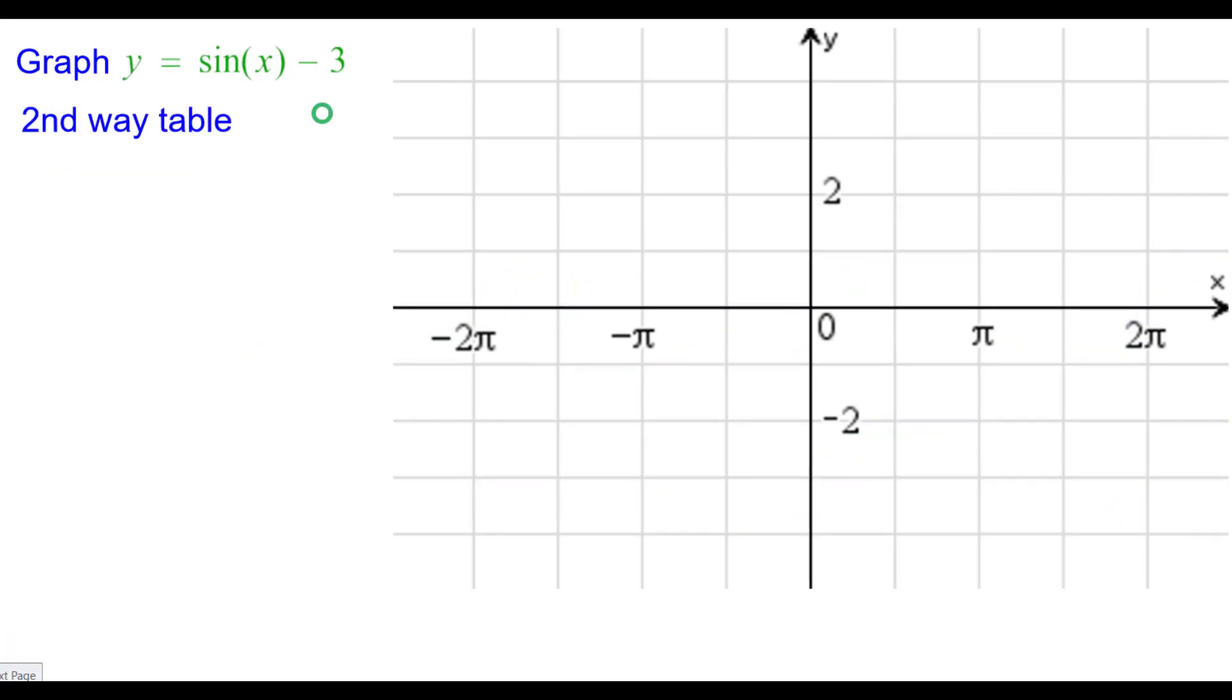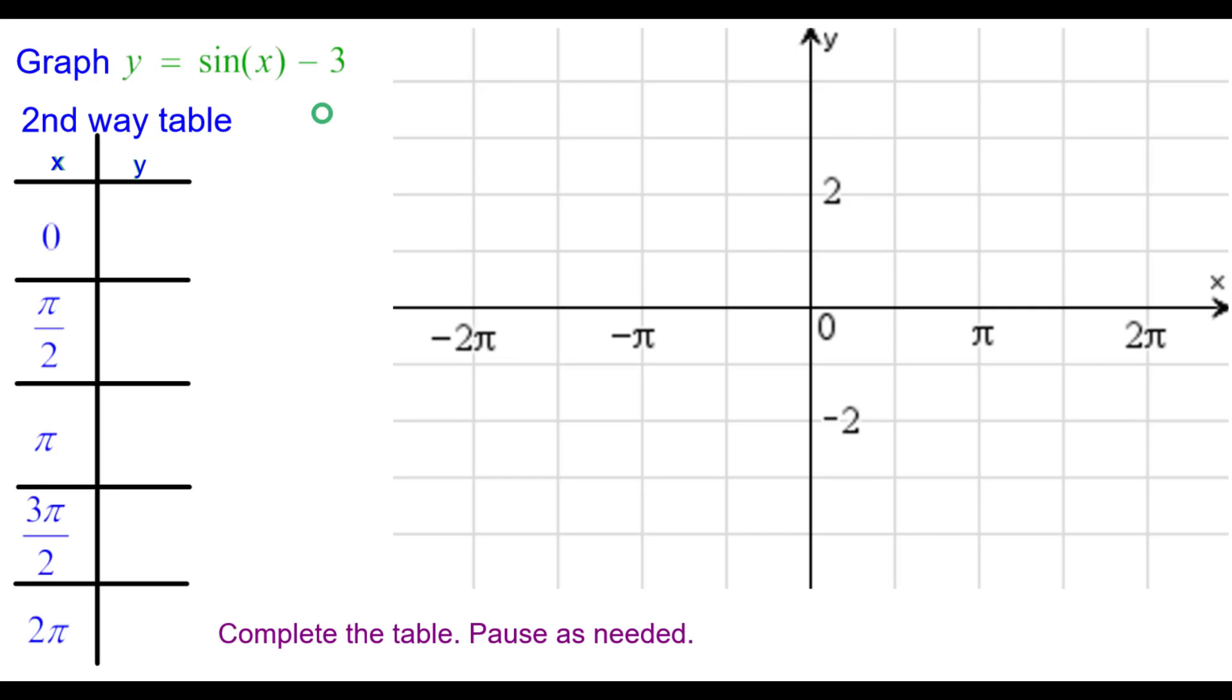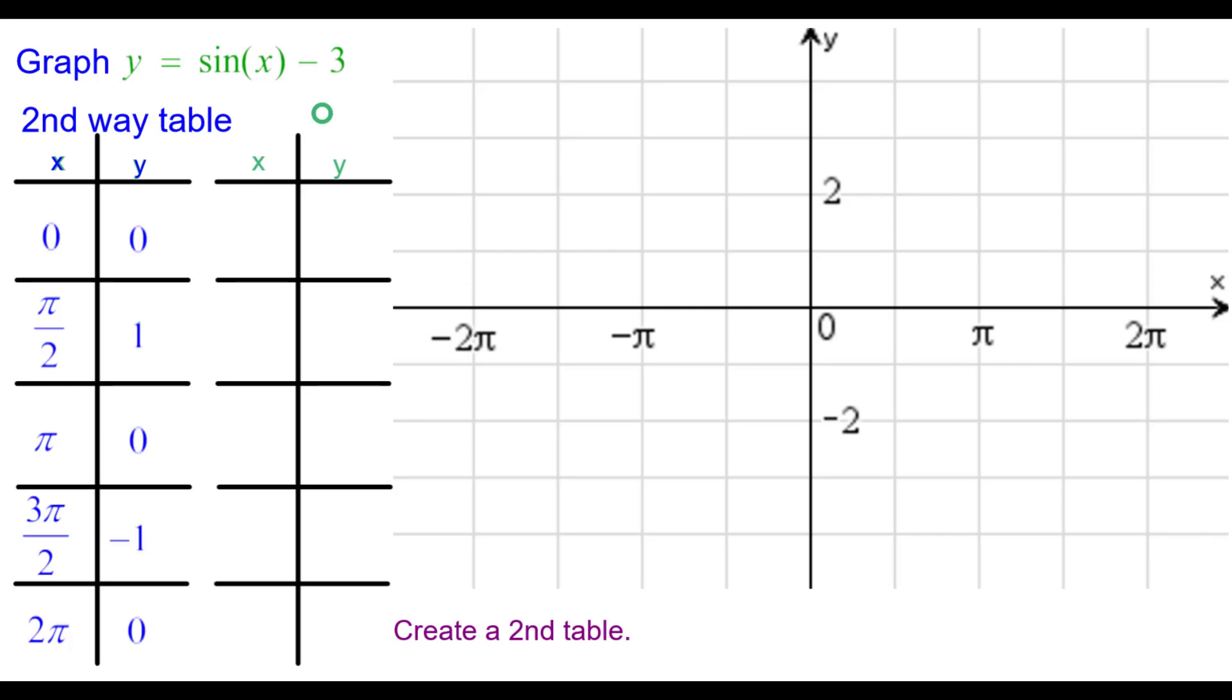The second way is going to be with a table. So please complete the table, pause to do so. These are the values you'd know, the ones on the axes. We're going to need to create a second table for our graph. And we look that we're going to have to subtract 3 from each of the y-coordinates, and that's the only thing we do. So that affects the y-coordinates. The x-coordinates are not affected, so we'll keep the x-coordinates the same.